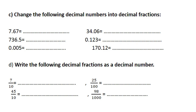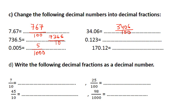Now I need to change the decimal numbers into decimal fractions. You put the line of fraction; you put in the numerator the number as it is without a point. The denominator depends on how many digits I have in the decimal part — I have 2 digits, so it's over 100. The second one is 736.5, so I put the number as it is without a point over 10, because I only have 1 digit in the decimal part. Now I have 5 over 1,000 because it's in the thousandths place. 3, 4, 0, 6 — it's over 100. 123 over 1,000.